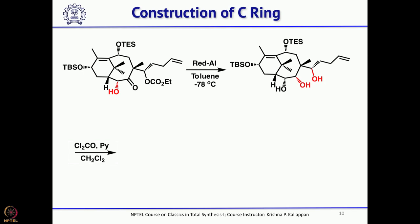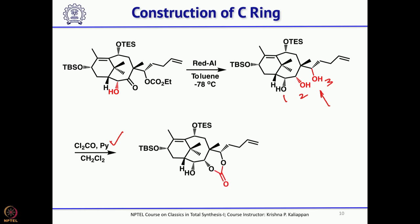There are three secondary alcohols. When treated with phosgene, it can form a cyclic carbonate — either with the 1,2-diol or between positions 2 and 3. There are two possibilities, but what was obtained was the 6-membered cyclic carbonate.